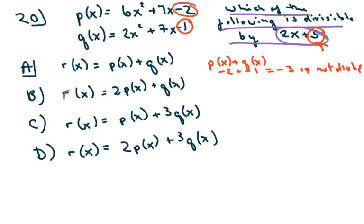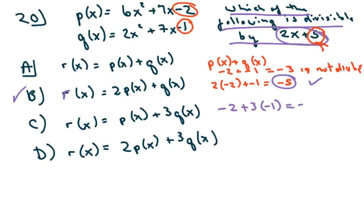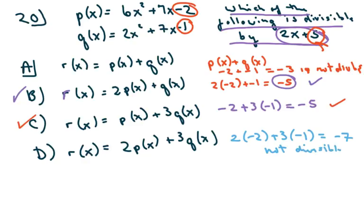Let's try option b: 2 times negative 2 plus negative 1, which gives negative 5. Negative 5 is divisible by 5, so that works. Now option c: negative 2 plus 3 times negative 1 gives negative 5 — yes, divisible by 5, so this works too. For option d: 2 times negative 2 plus 3 times negative 1 gives negative 7, which is not divisible by 5. So options a and d are out; we need to check b and c.